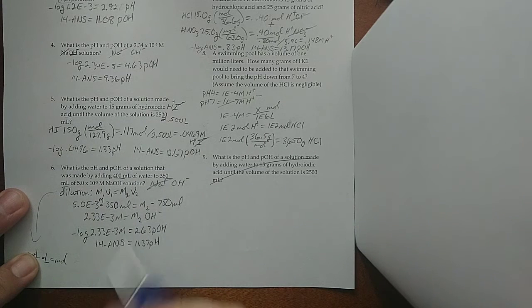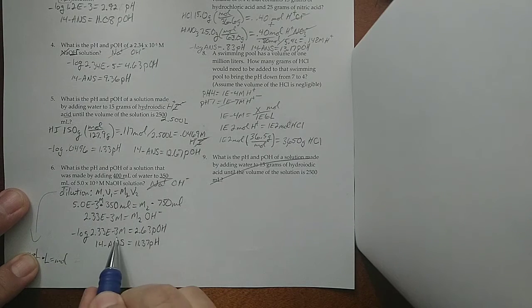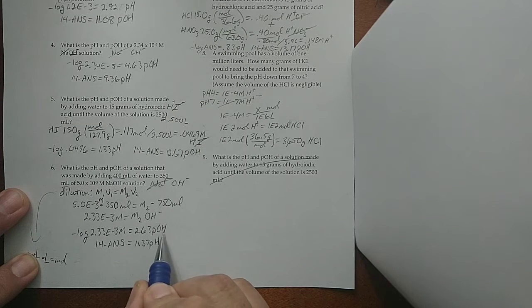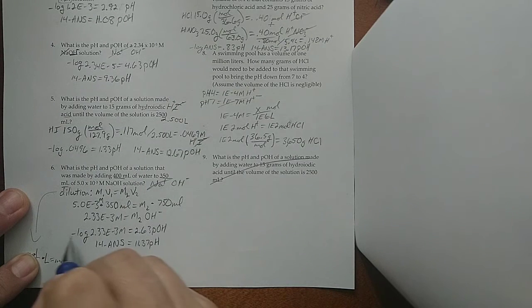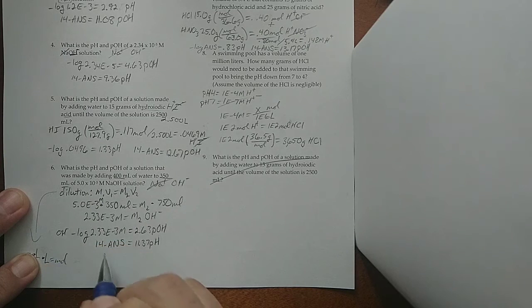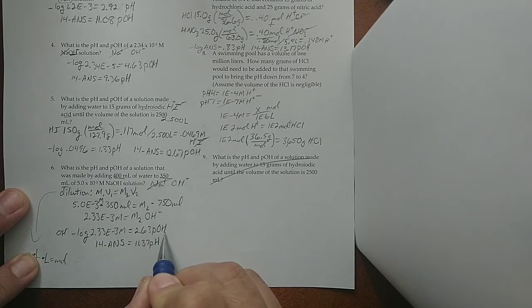How do we get the p number, the pH, the pOH? We take the negative log of whatever that molarity was, and that turned it into pOH, because I was working with OH⁻ molarity, wasn't I? So, I get pOH.